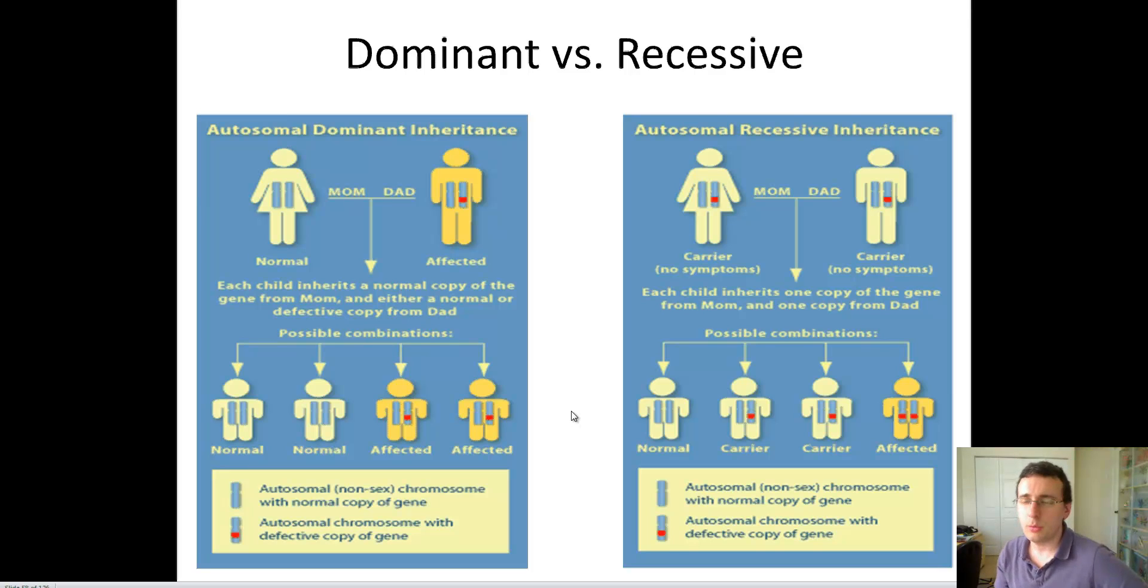Now, we talked about sex linkage before, and most sex-linked disorders were recessive, which means you have to have the gene by itself in a hemizygous setup, either because of X chromosome deactivation or in males when they only have one X chromosome, or they have to be genes which are paired. In other words, a female that has both X's which are defective.